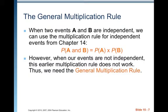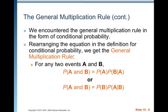Now let's look at the general multiplication rule. When two events A and B are independent, we can use the multiplication rule for independent events from Chapter 14: the probability of A and B equals the probability of A times the probability of B. However, when our events are not independent, this earlier multiplication rule does not work. Thus we need the general multiplication rule. Rearranging the conditional probability definition, for any two events A and B: the probability of A and B equals the probability of A times the probability of B given A, or equivalently, the probability of B times the probability of A given B.